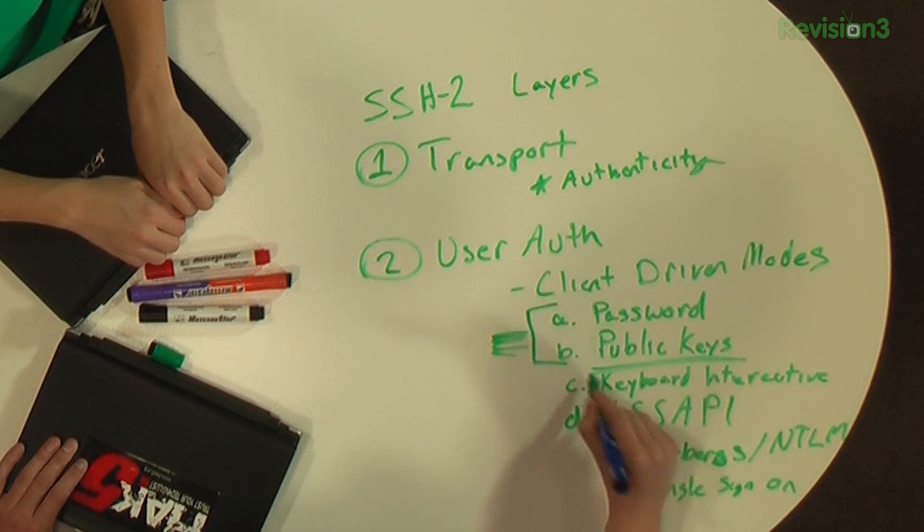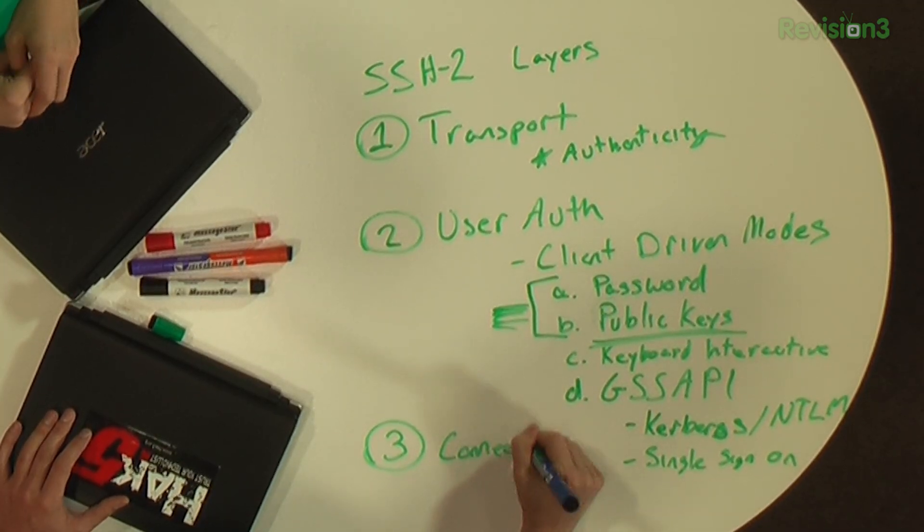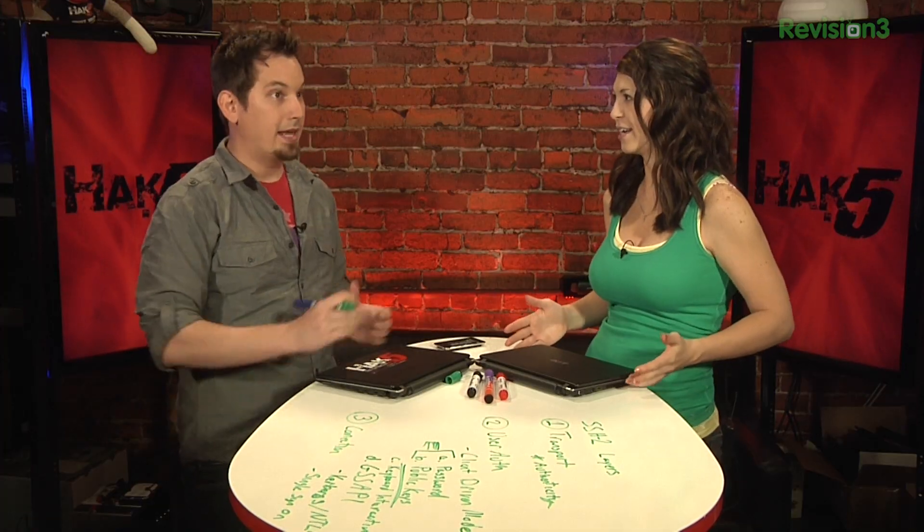Before we get into public keys, the last layer — layer three — is the connection layer. It is divided up into different channels, just like channels on Wi-Fi or a cordless phone. Each channel is asymmetric communication, so you can be having a conversation about one thing as well as conversations about different things all along the same connection. The first channel is a shell channel.